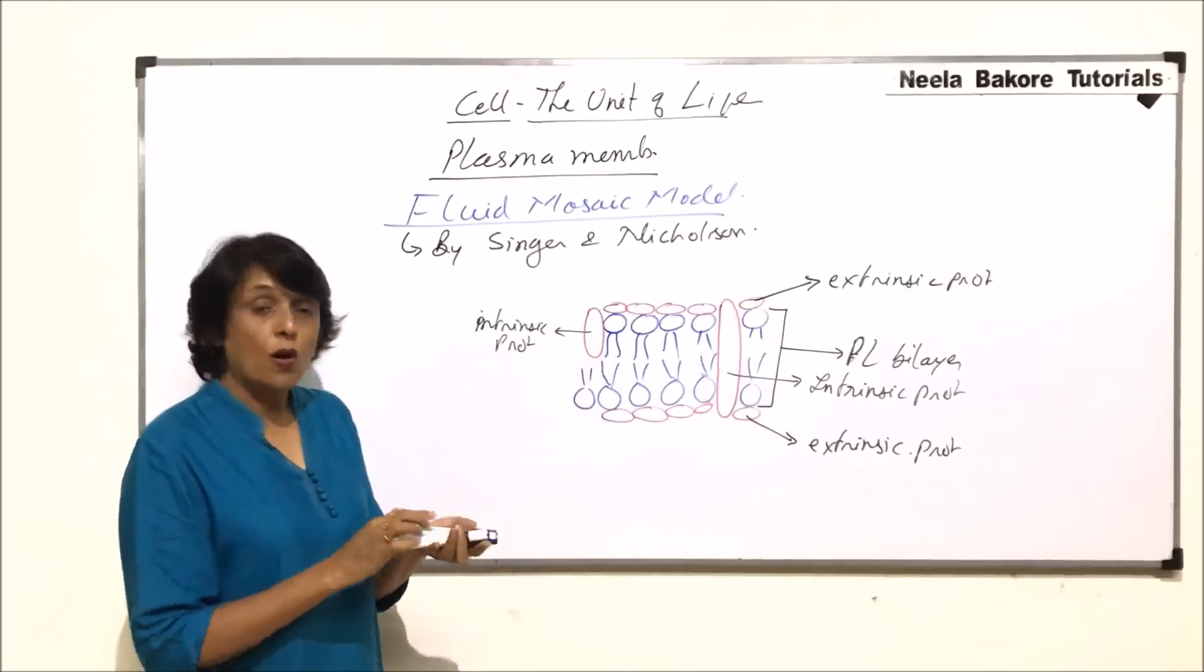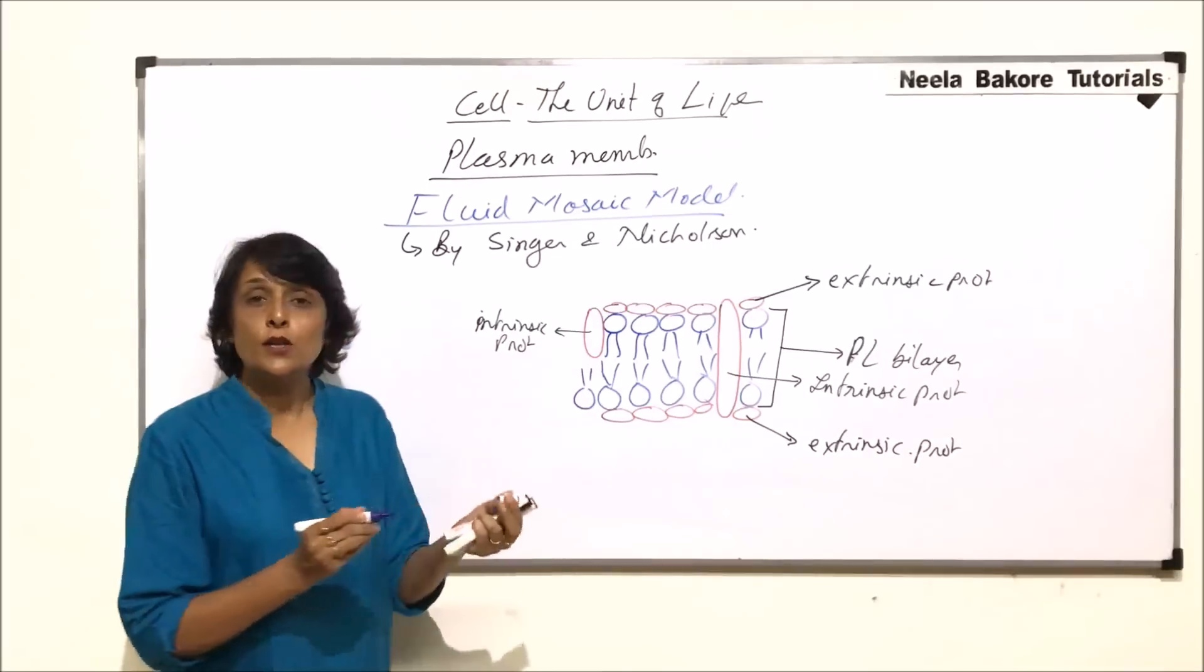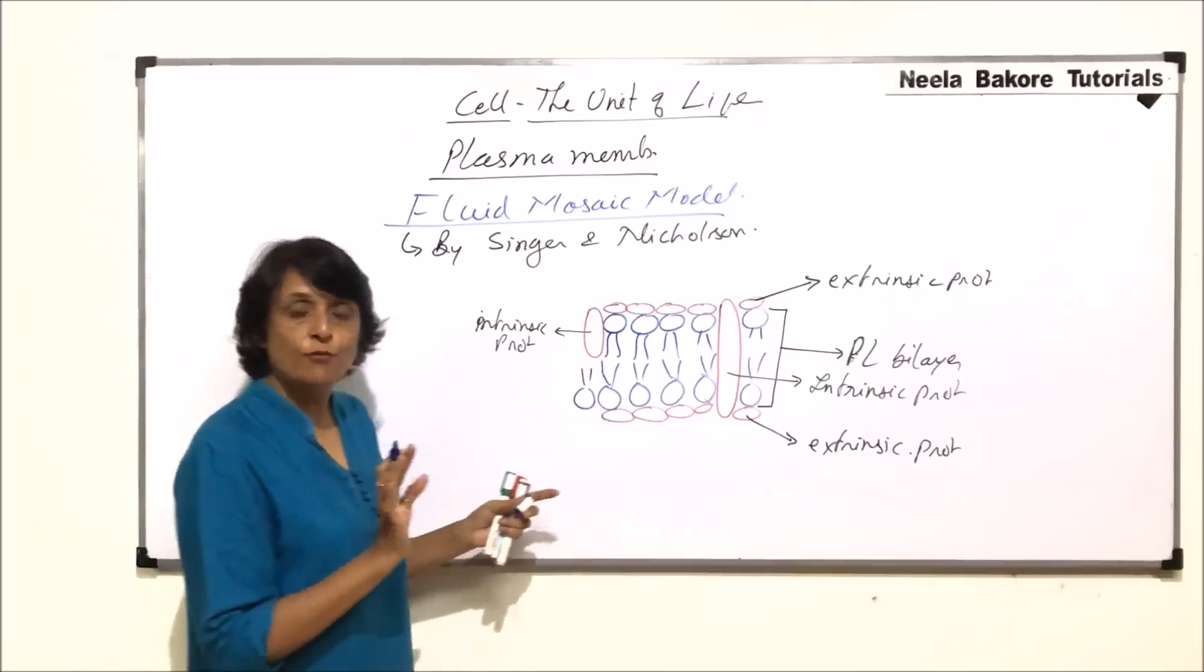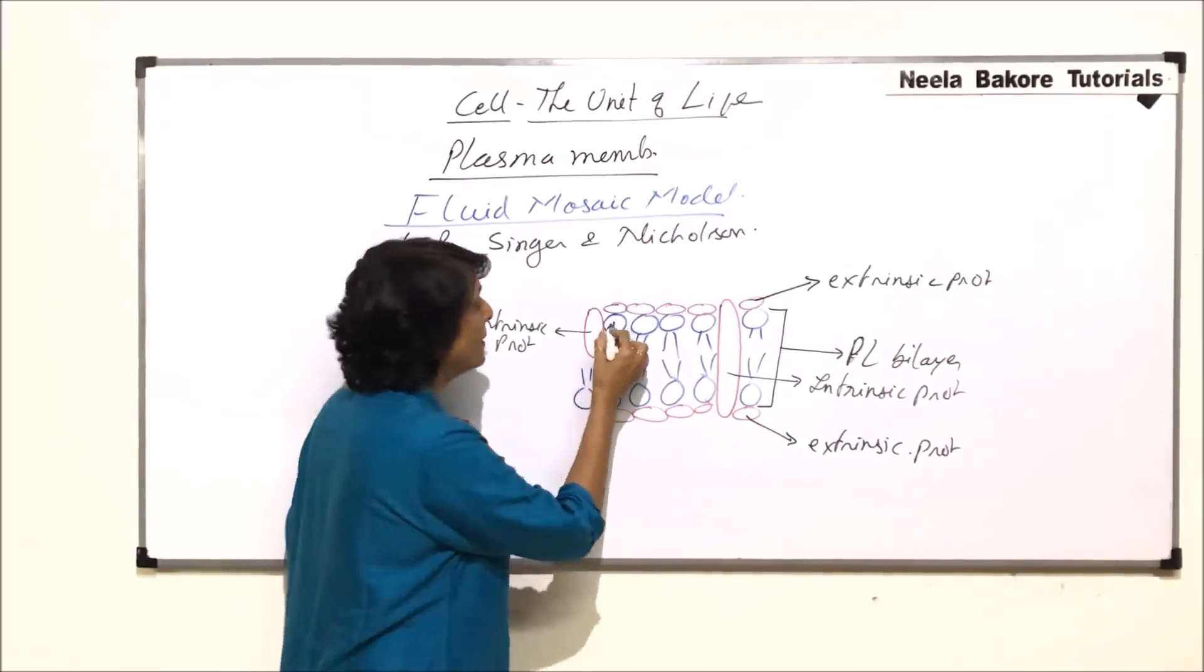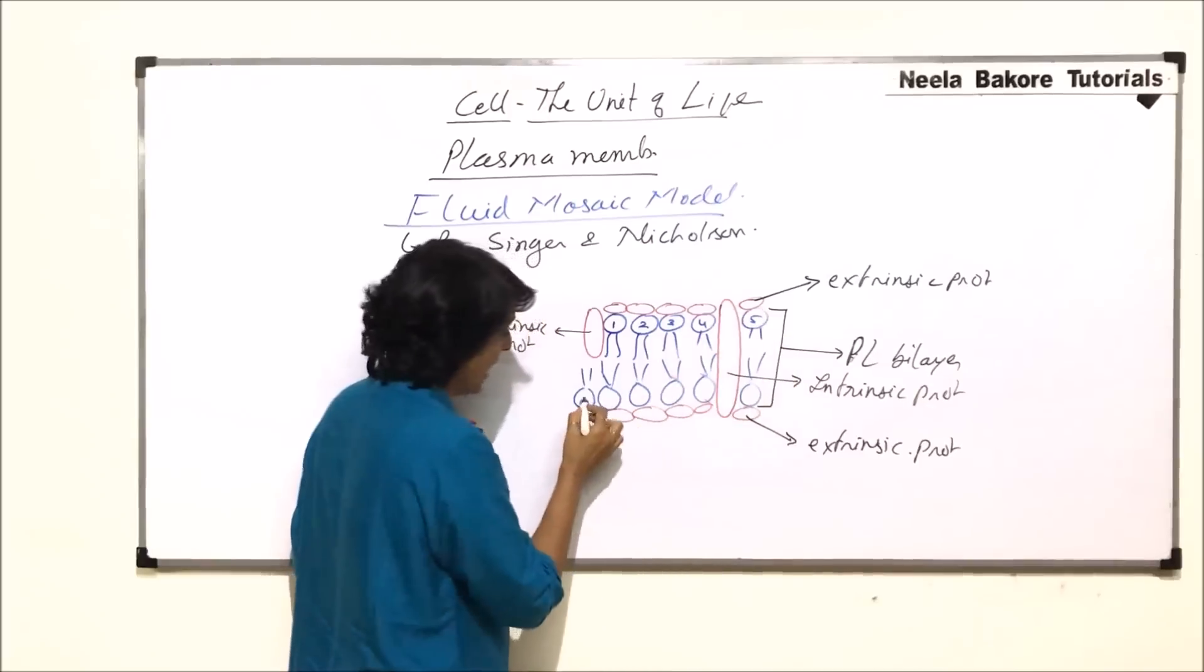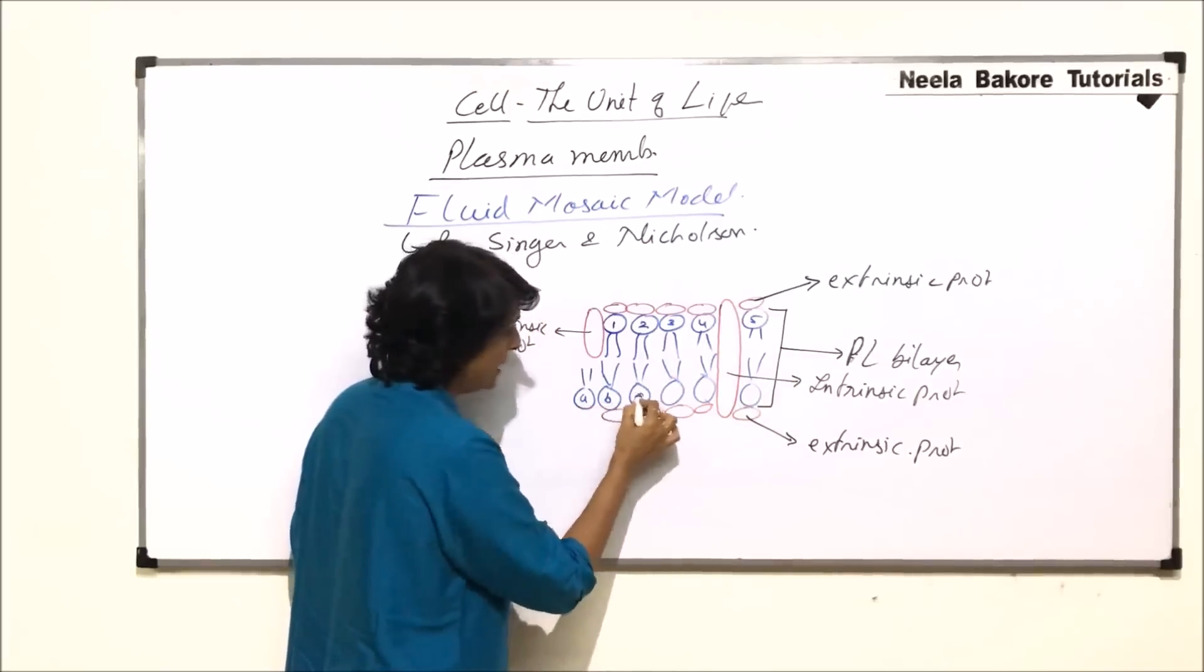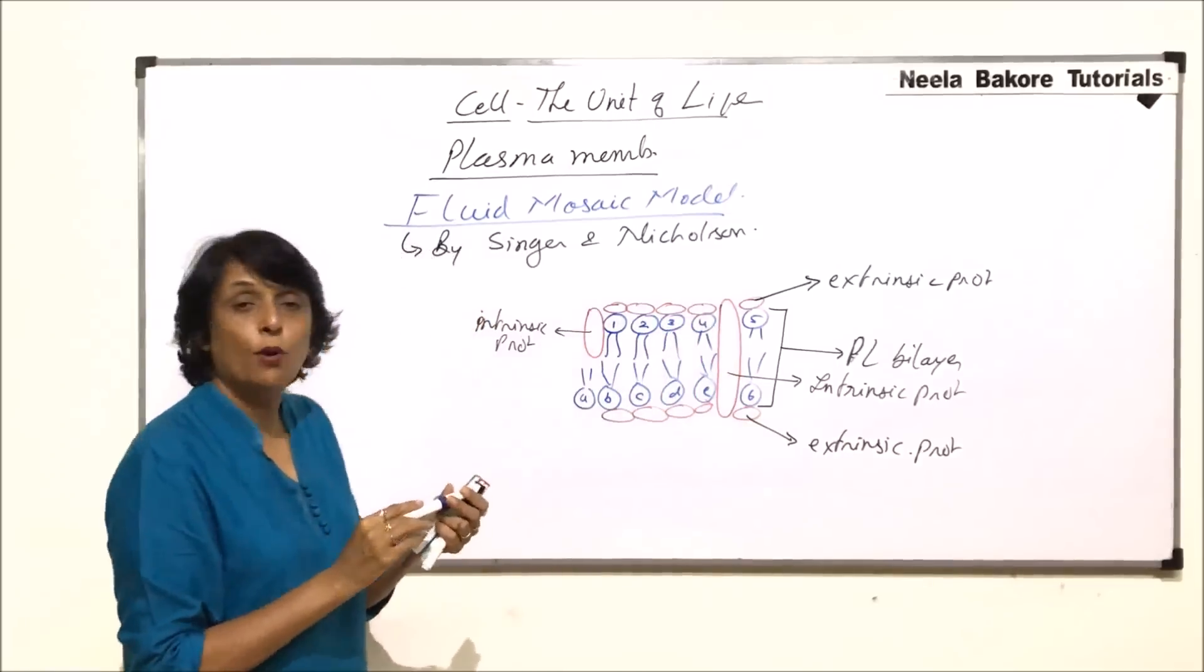Let us now talk about the movement of phospholipids. Phospholipids show two types of movements. To understand that movement we number them. This is one, two, three, four, and five, and here we write a, b, c, d, e, and f. These are the phospholipid molecules.